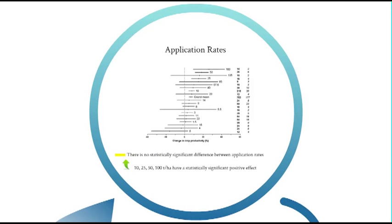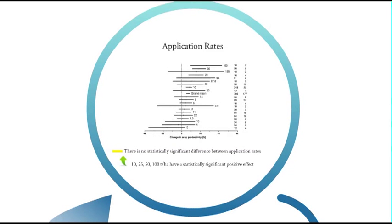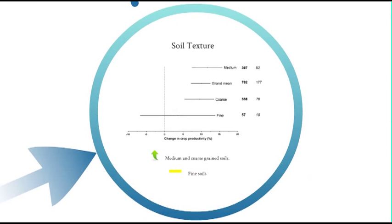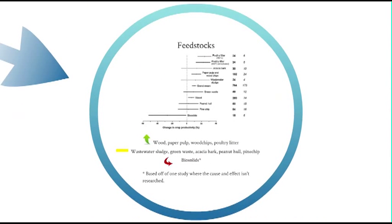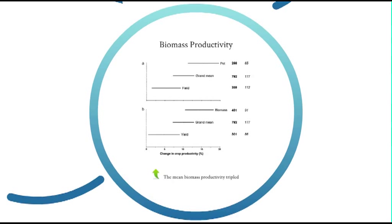Looking at the application rates of biochar onto the soil, the data shows that there is no statistically significant difference between the application rates. However, some rates are shown to have a significant positive effect. Biochar is most effectively used when applied on medium and coarse grain soils; on fine soils, there is no statistically significant effect. Some feedstock sources for biochar are more or less effective than others. When biochar is applied, the productivity of the biomass triples.